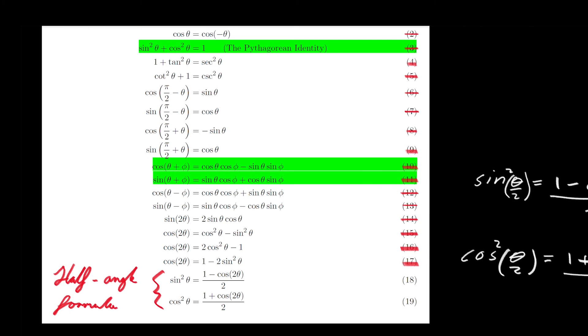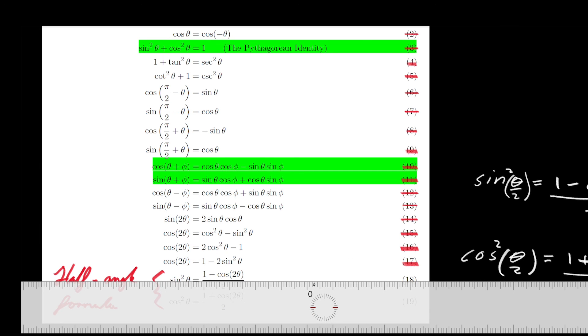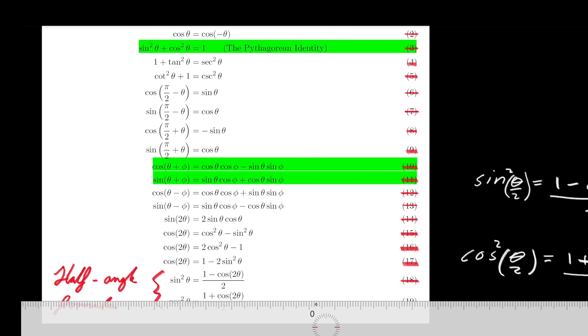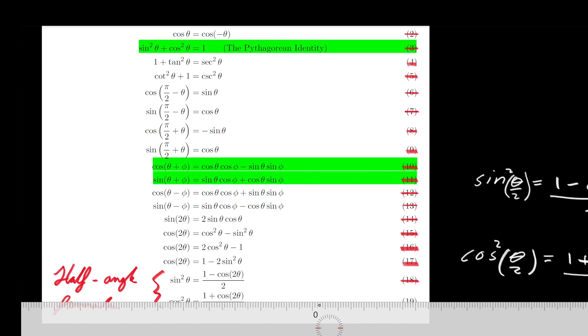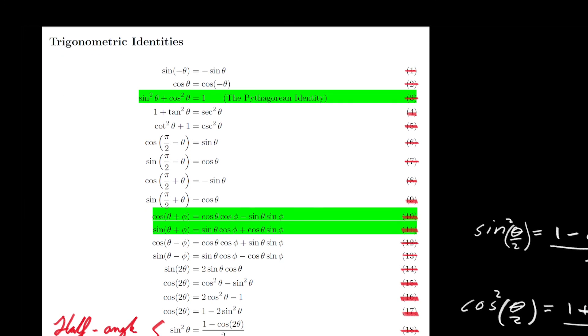So we can go back up to our list, and we can cross off all of the trigonometric identities, because we've proven all 19 of them. So we can cross out 18 and 19. So this is the last video in the trigonometric identities topic, and now we're moving on to new topics.